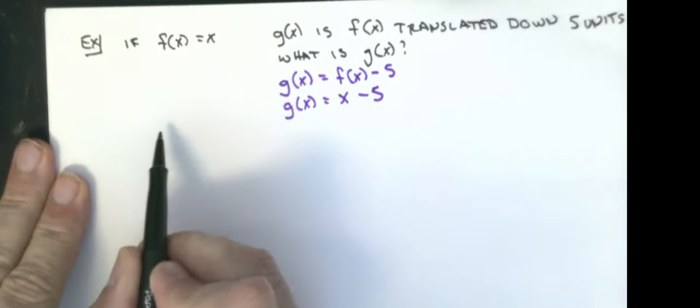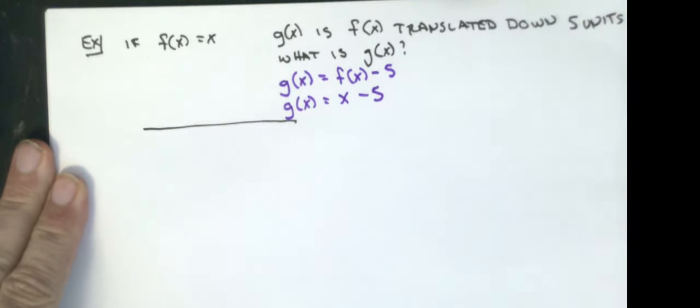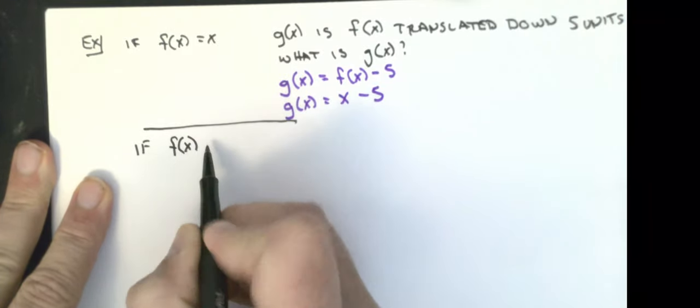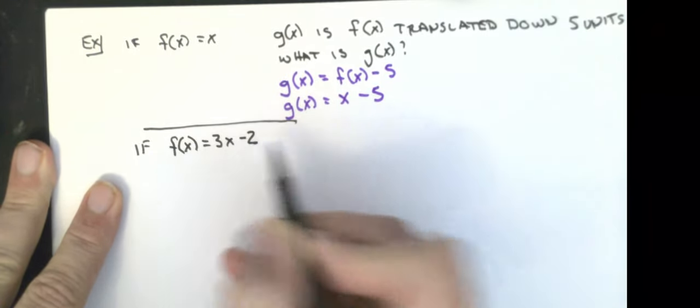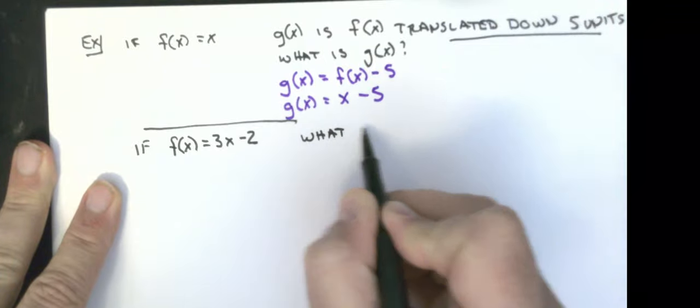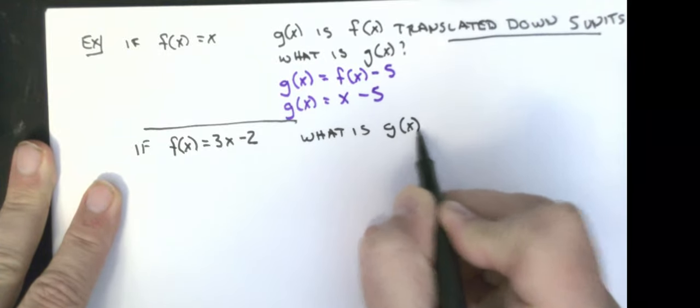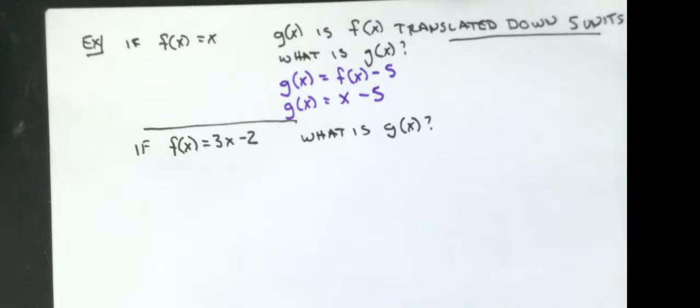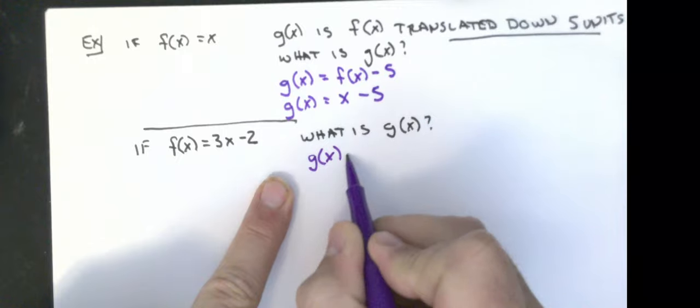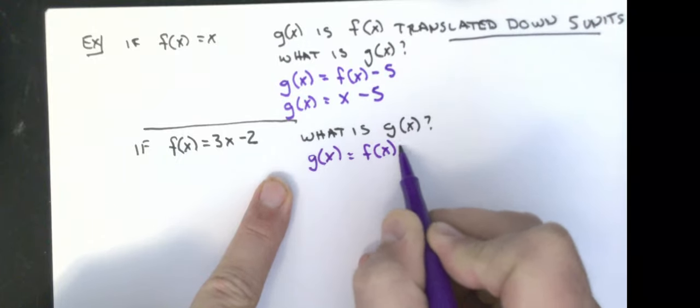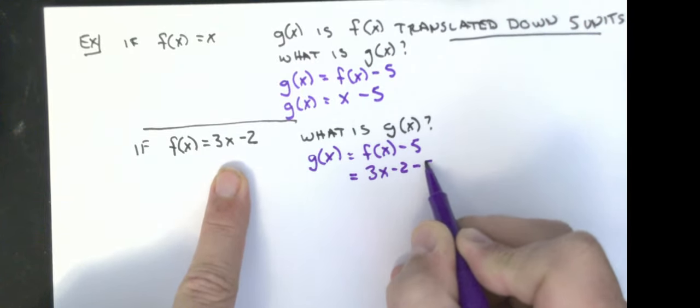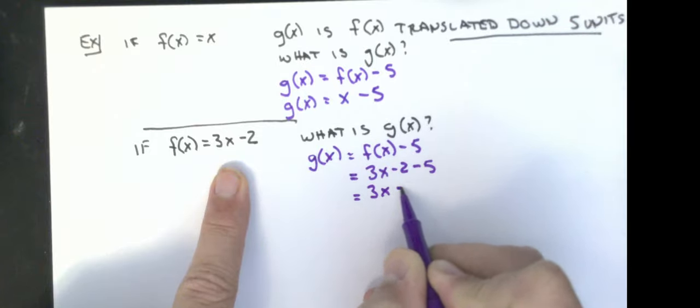And it doesn't matter that I just start out with the basic parent function, I could have said if f(x) = 3x - 2, what is g(x). And in this case, again, my g(x) is the same original thing, it's equal to f(x) - 5, while my f(x) is 3x - 2, and I subtract 5 from that, which would be 3x - 7.